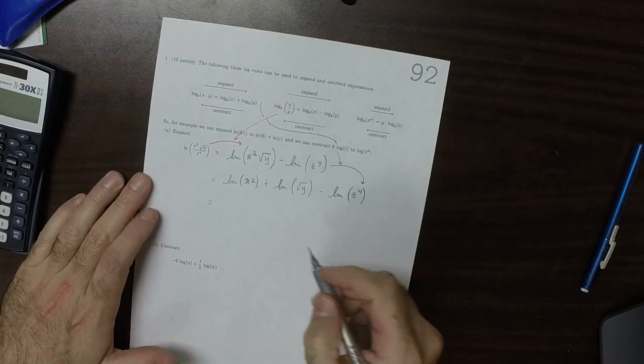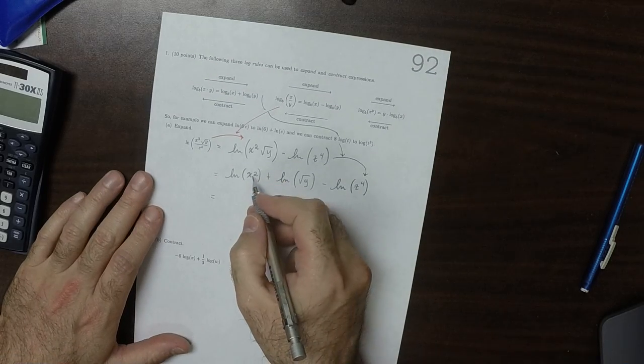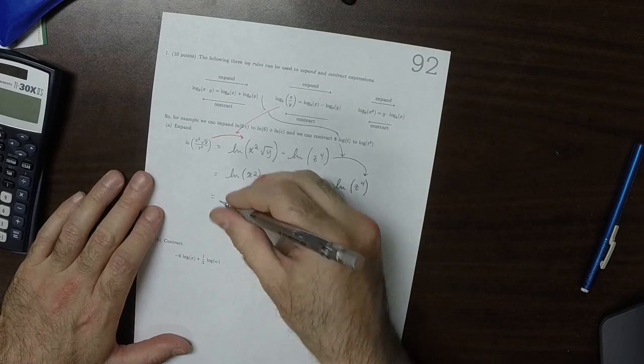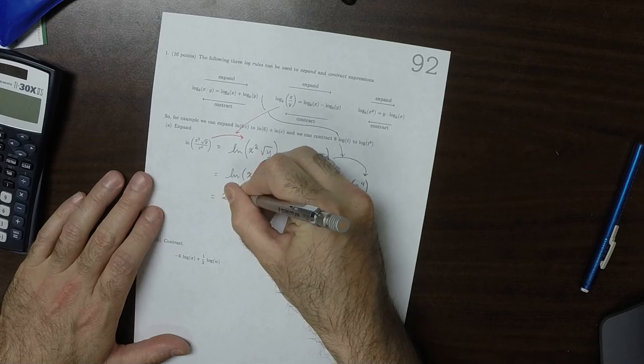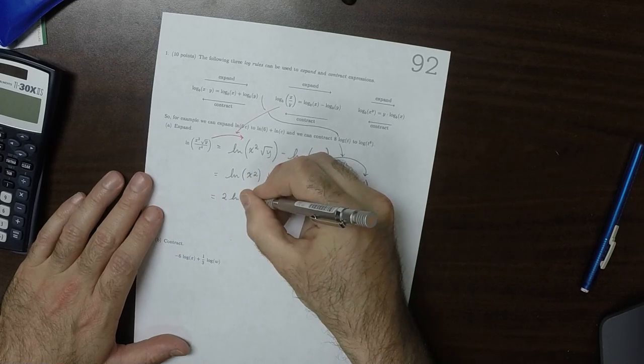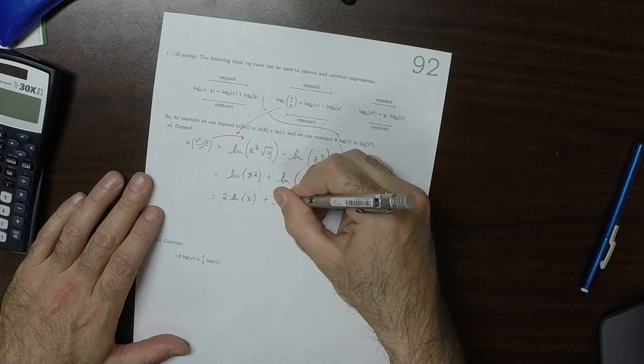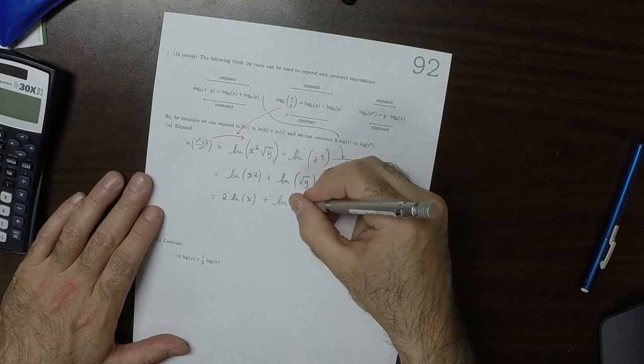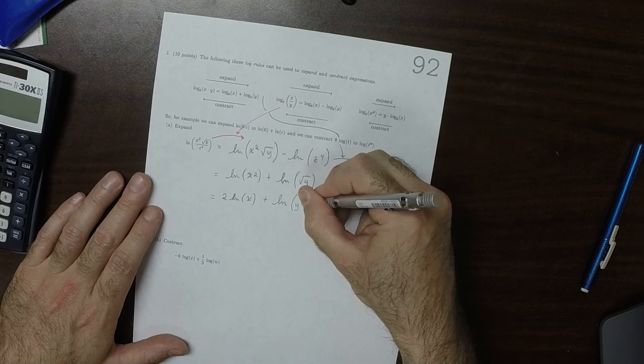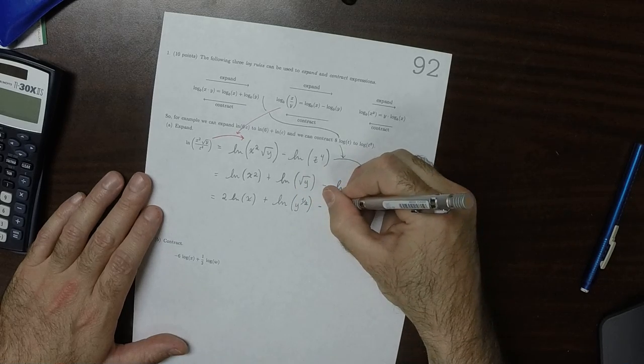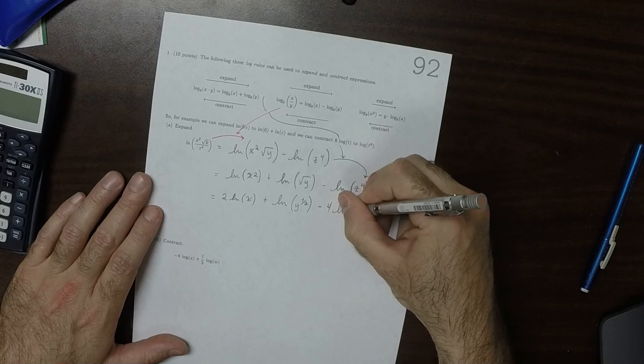And now, to go to the next step, I'm going to bring the exponents out. So this would be 2 log x, and then plus, I'll say, log of y to exponent half, and then minus 4 log z.